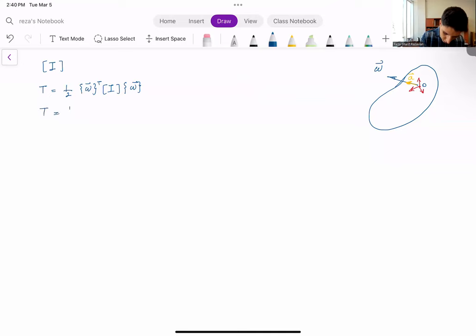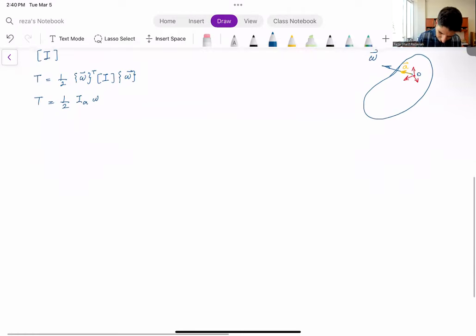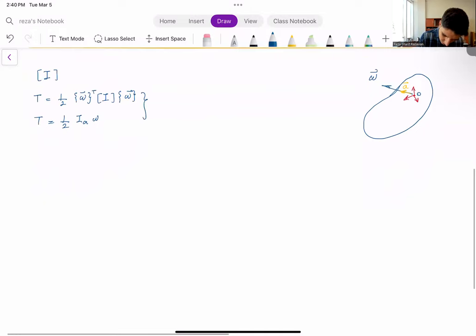And if I consider that, I can also know T is one half i about this axis a, so this is a scalar i, the same kind of i we have been using in 2D motions and in simpler cases, times omega. And omega is also a scalar. It is the norm of the omega vector or in the axis angle kind of notation. This was phi dot. So I have these two and they are equal.